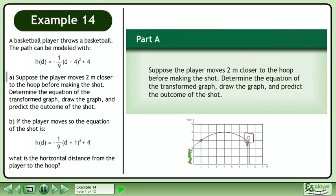A basketball player throws a basketball. The path can be modeled with h(d) = -1/9(d - 4)² + 4.